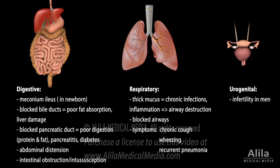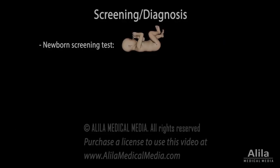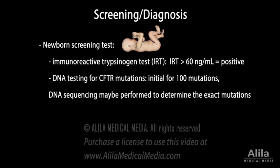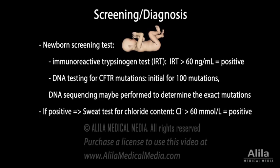In the urogenital system, CF may cause infertility in men and decreased fertility in women. CF is part of the newborn screening test in many countries. The screening typically involves an immunoreactive trypsinogen test and a DNA test for common CFTR mutations. If the result is positive, a sweat test for chloride content is performed to confirm the diagnosis.